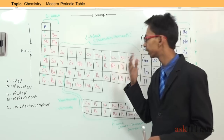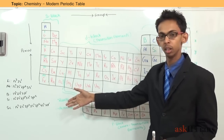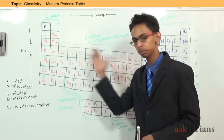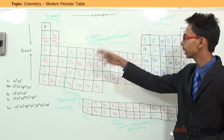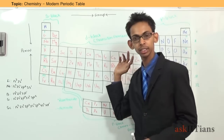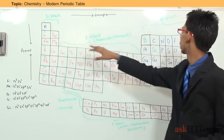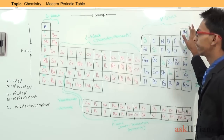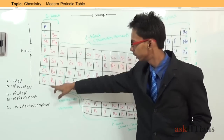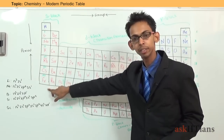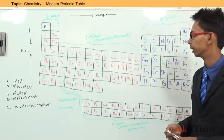The periodic table contains some columns and some rows. The columns are known as groups while the rows are known as periods. There are a total of 18 groups and 7 periods in the modern periodic table.